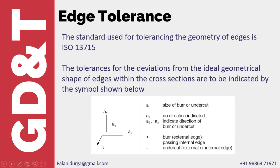According to ISO 13715, you can either specify a symbol to control the edges or give it in the form of a general note. The symbol consists of elements wherein the arrow will be pointing onto the edge. The edge can be an external edge or an internal edge.